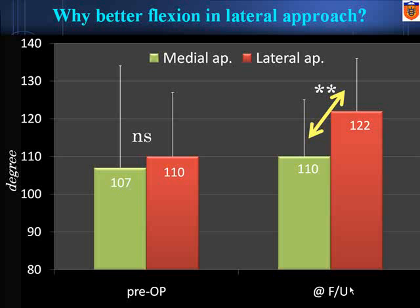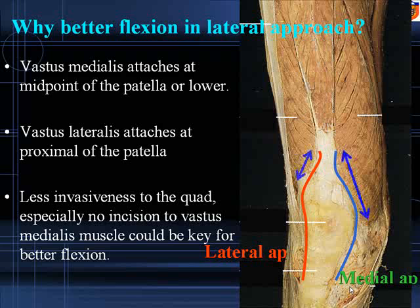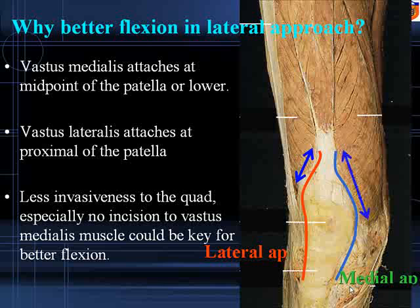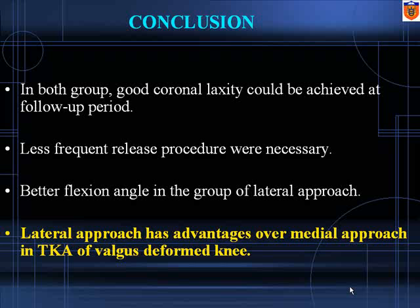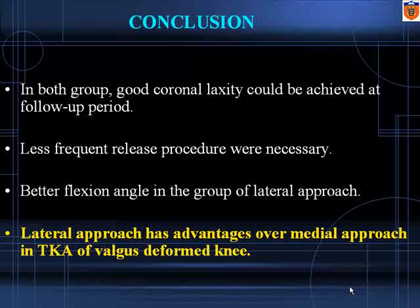While better flexion was achieved in the lateral approach at follow-up, we paid attention to differences in attachment of the vastus lateralis and medialis. Vastus medialis is attached at the midpoint of the patella or more distally, whereas vastus lateralis is attached at the proximal patella. Even with the same length of dissection, invasiveness to the muscle was different — especially with no incision to the vastus medialis in the lateral approach. Also, reduced release procedures for lateral structures in the lateral approach could result in better postoperative flexion. Conclusion: in both approaches, good coronal stability was achieved. In the lateral approach, less frequent release procedures were necessary and better flexion was obtained at follow-up. The lateral approach has advantages over the medial approach. Thank you for your attention.